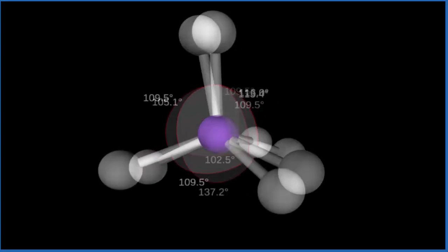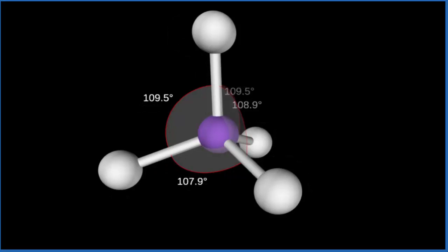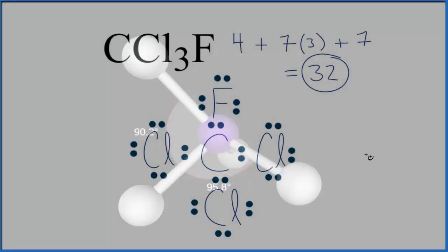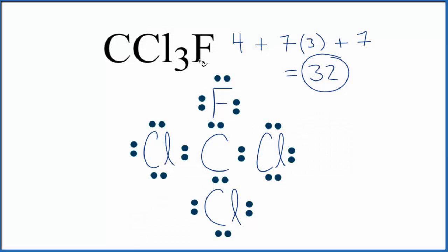We end up with a tetrahedral molecular geometry, and the bond angles, probably about 109.5°. They might be a little bit different. Let's go back to our Lewis structure. So this is the Lewis structure for CCl3F, trichlorofluoromethane. We also took a look at the molecular geometry, which is tetrahedral. This is Dr. B, and thanks for watching.